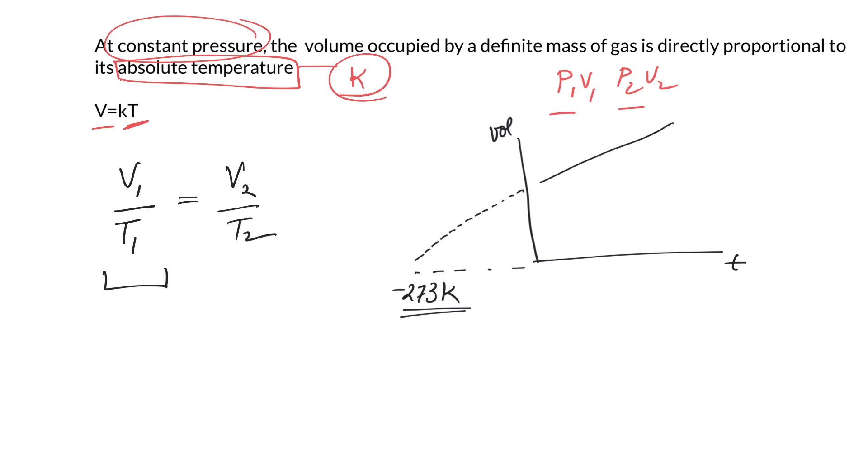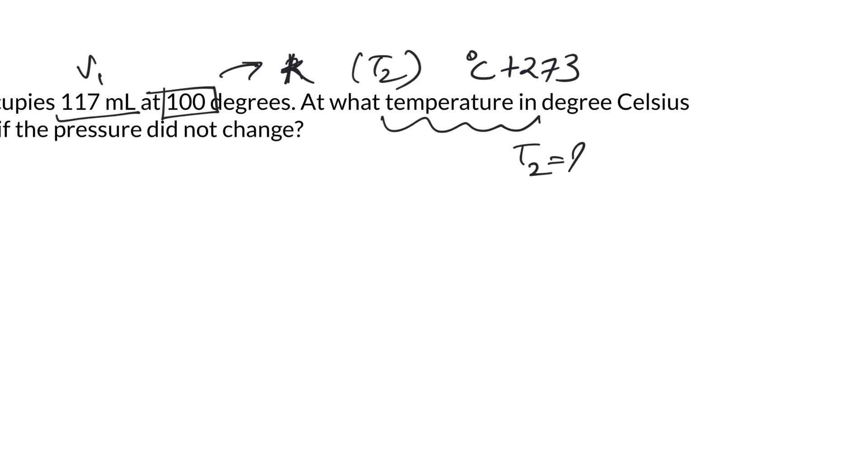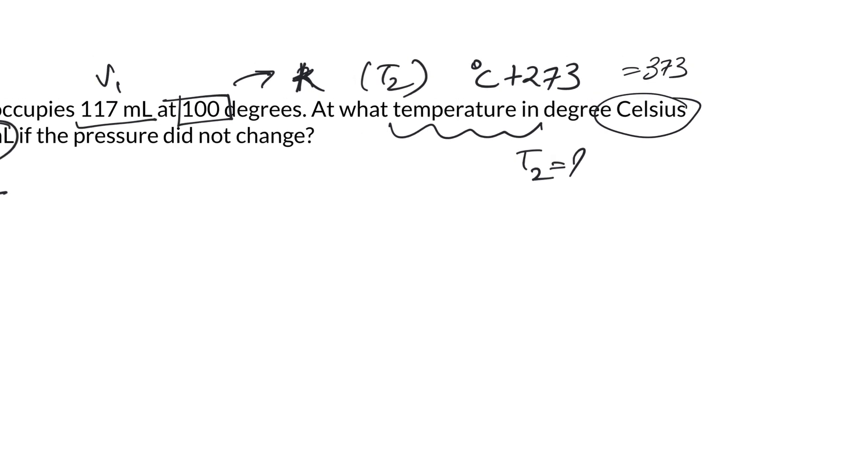Let's try a problem on this. A sample of nitrogen occupies 117 ml at 100 degrees. This is not our T1 because we have to convert this into Kelvin. Let's convert our temperature into Kelvin. The formula is degree C plus 273, and how much is that? 100 plus 273, just about 373. But remember, don't be tempted to use Celsius, it will land you in a mistake.